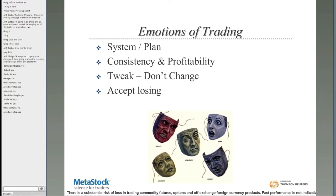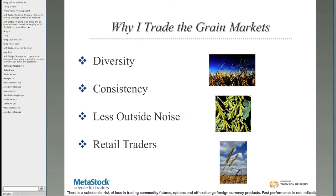If something has been working and all of a sudden it doesn't, don't change up your whole system immediately. It's probably just a market fluctuation — tweak it to adapt to the marketplace. Don't reinvent the wheel every time you go on a small losing streak. And lastly, accept losses — they're part of the game. Unless you're running some high-frequency algorithm at Goldman Sachs, you're not going to make money every single day. Accept losing as part of the business.